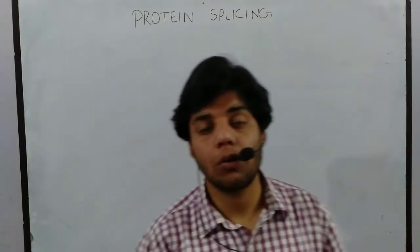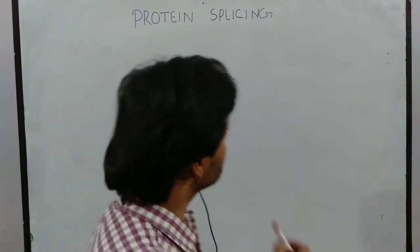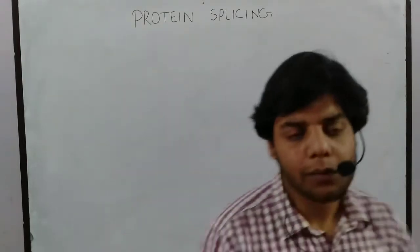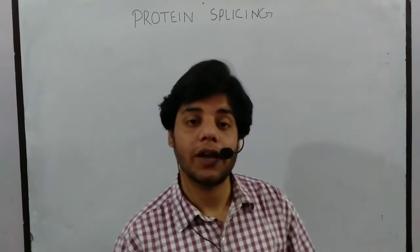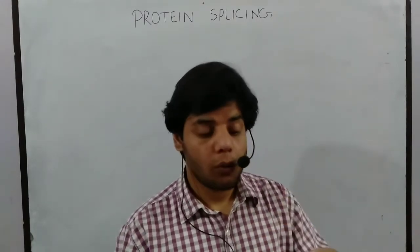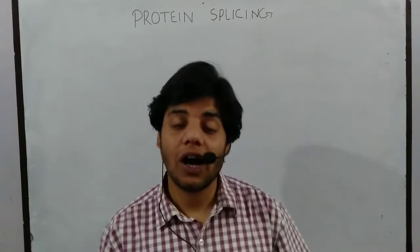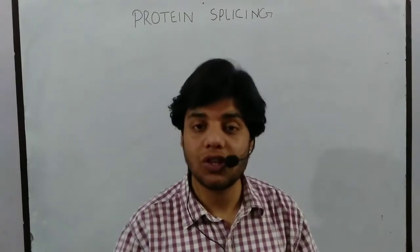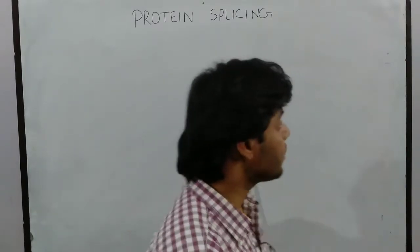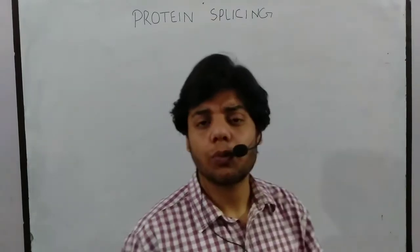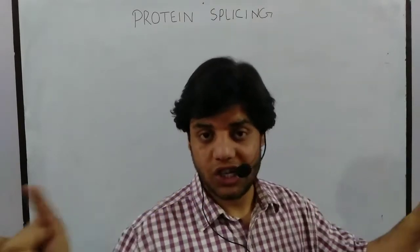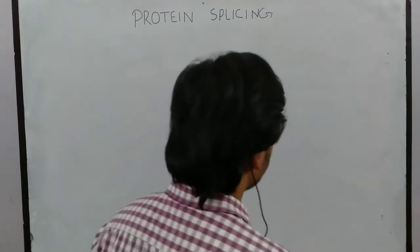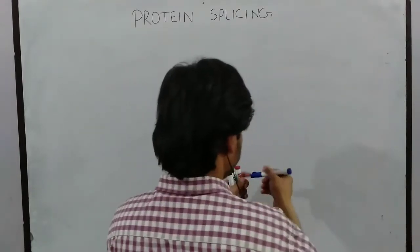Today we are going to talk about how protein splicing occurs. Protein splicing is important because once the extra or worthless portion present in the protein is removed, the protein will fold and convert into a secondary structure, making it usable by the cell. Due to protein splicing, the polypeptide chain can easily be folded and converted into secondary or tertiary structure.